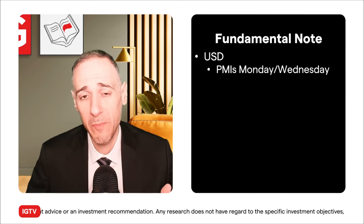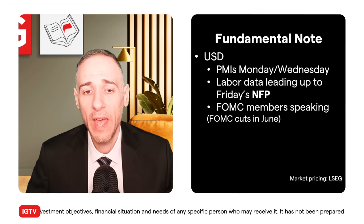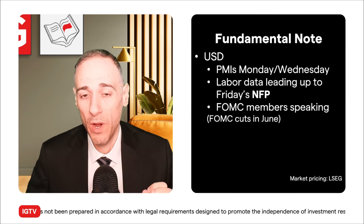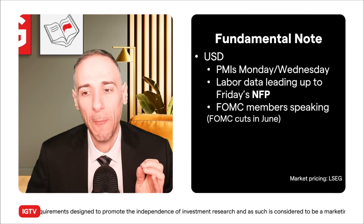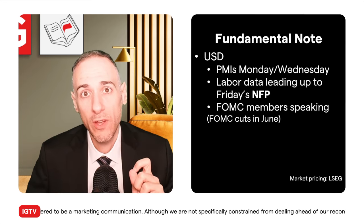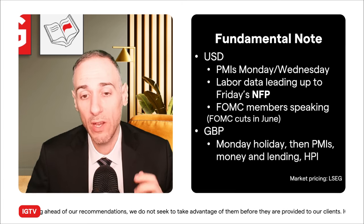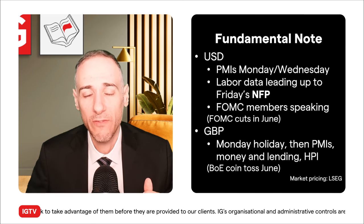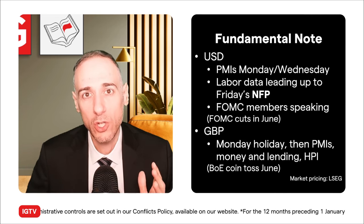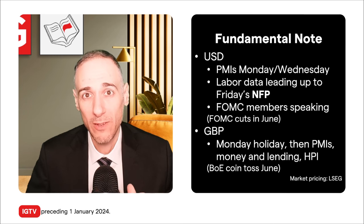What are the fundamental considerations for this week? On the dollar side, depending on when you're watching, you have PMIs — manufacturing on Monday, services on Wednesday — and pretty much labor data leading up to Friday's Non-Farm Payrolls. Several FOMC members are speaking, including Fed Chair Powell. Markets are pricing in by a majority — though not a significant one — the first rate cut in June, with three cuts expected this year. It won't take much to tilt that narrative. From the UK side, there's a bank holiday Monday, PMIs, money and lending data, housing price data. For the Bank of England, it's a coin toss for a rate cut in June, and also not much needed to shift the narrative on three cuts this year. That's about it — thank you for watching.